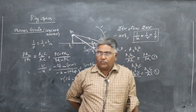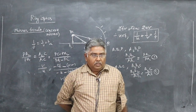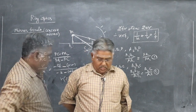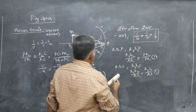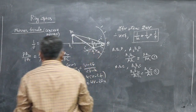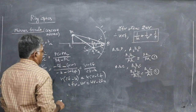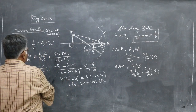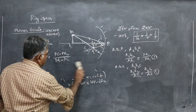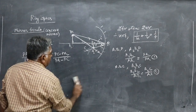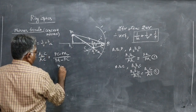Therefore, the mirror formula is: 1/f = 1/v + 1/u. This completes the derivation of the mirror formula for a concave mirror when a real image is formed. Next, we will define the expression for magnification.